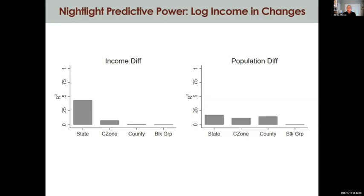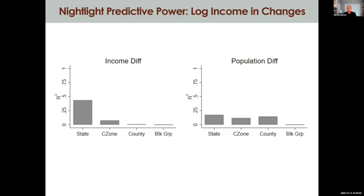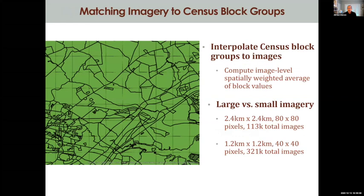I want to be cautious about how our results might generalize to a developing country context, because the US is already pretty urbanized. Changes in nightlights might be less indicative of changes in economic activity than they would be in developing countries with ongoing urbanization. My prior expectation would be that nightlights would do a better job of predicting changes in smaller geographies in developing countries, but these results suggest we want to make sure we validate that.